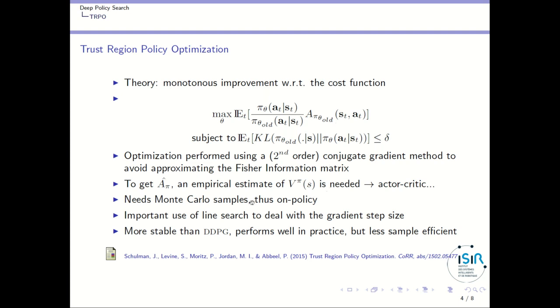Final important point is that in TRPO, they are using a line search method to tune the gradient step size, which is critical in the good performance of TRPO. Because tuning the gradient step size is difficult, and doing line search is an expensive but accurate method for doing so. So finally, TRPO is an algorithm that performs well in practice, which is more stable than DDPG. But it's less sample efficient because it's on-policy. So it cannot reuse the samples many times. And it is quite slow to converge.